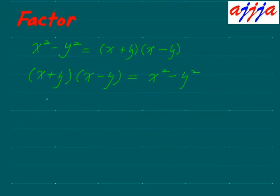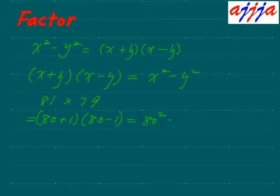So if you apply this one to our calculation, like this one, 81 times 79, then you can change this one like this: 80 plus 1, this one is 80 minus 1. Woah! So that means 80 squared minus 1 squared. You know 80 times 80 is 6400 minus 1, which is 6399. Woah!